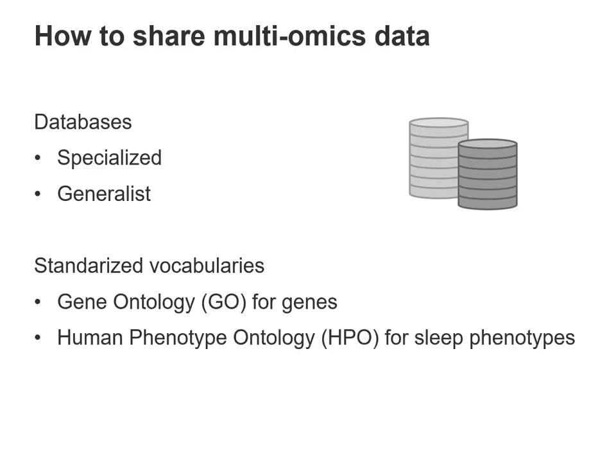For example, to standardize the description of our sleep phenotypes, the human phenotype ontology was the closest ontology available. However, it was made more to describe disease-linked phenotypes in humans, whereas we have healthy phenotypes in mice. Therefore, the correspondence is not one-to-one and it had to be done manually. But this situation is not unique to sleep — it can be found wherever there is no consortium.